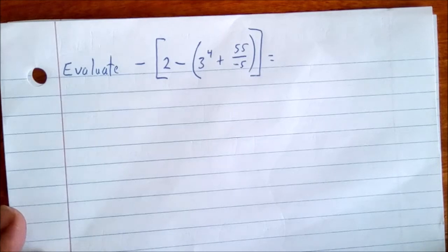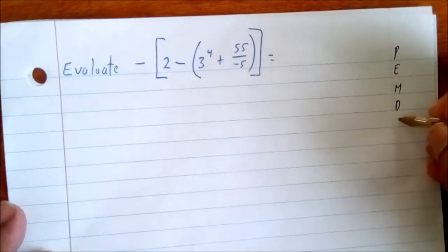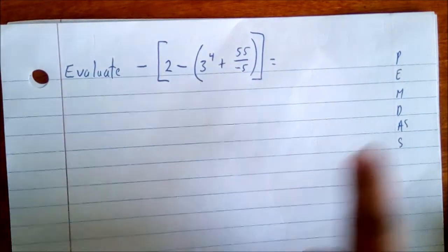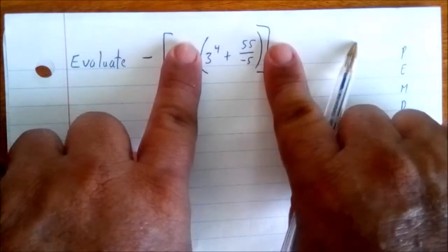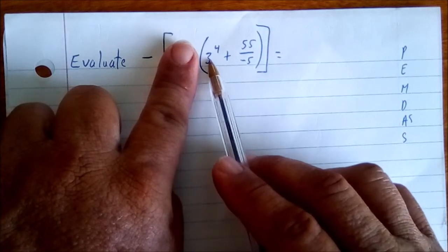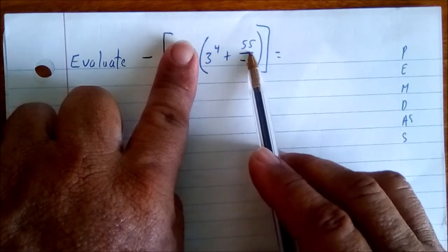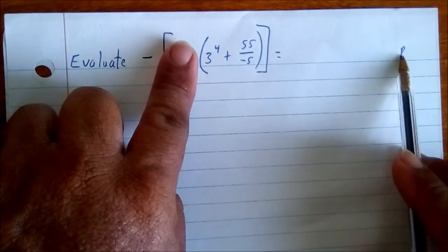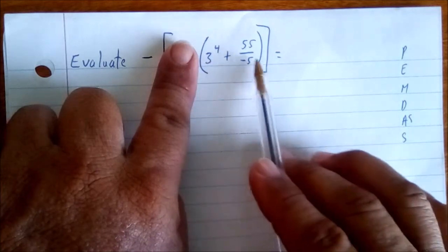Use PEMDAS to guide you. We have parenthesis within parenthesis, so we must work the innermost piece first. Inside we have 3 to the fourth plus 55 over negative 5 — that's an exponent and a division. After handling the inner parenthesis, PEMDAS says exponent comes before division.